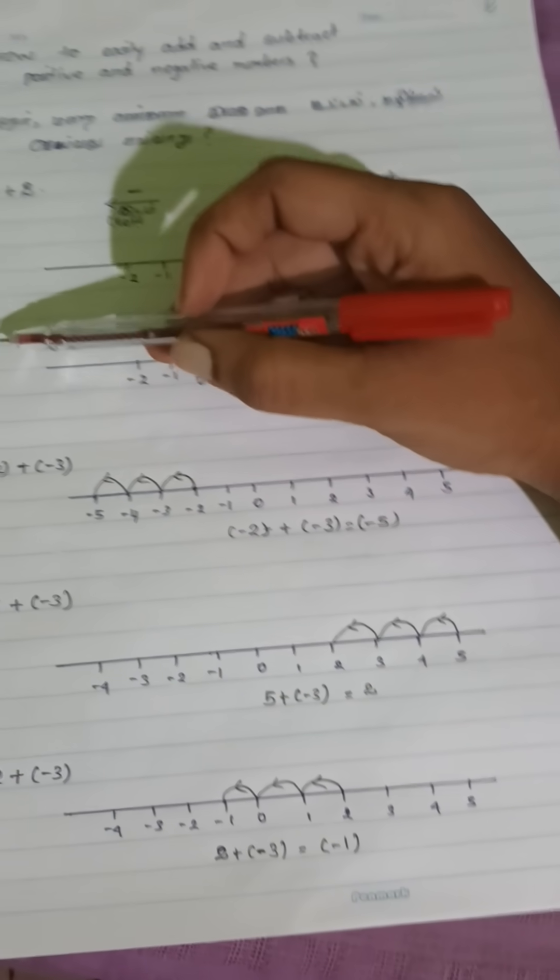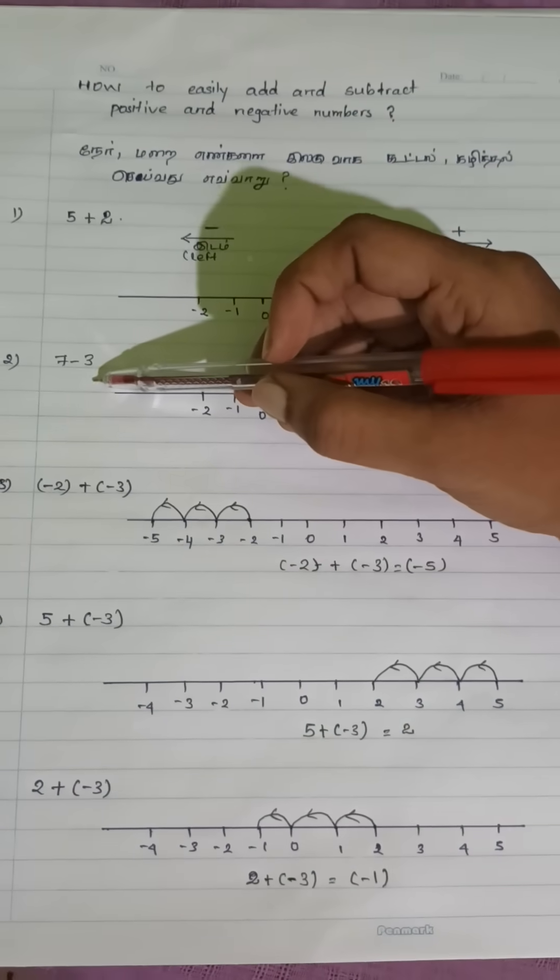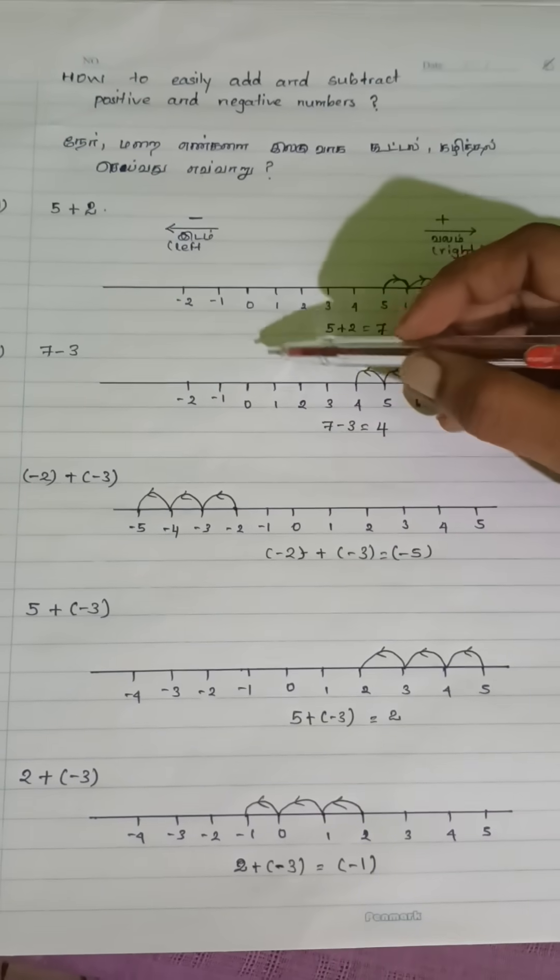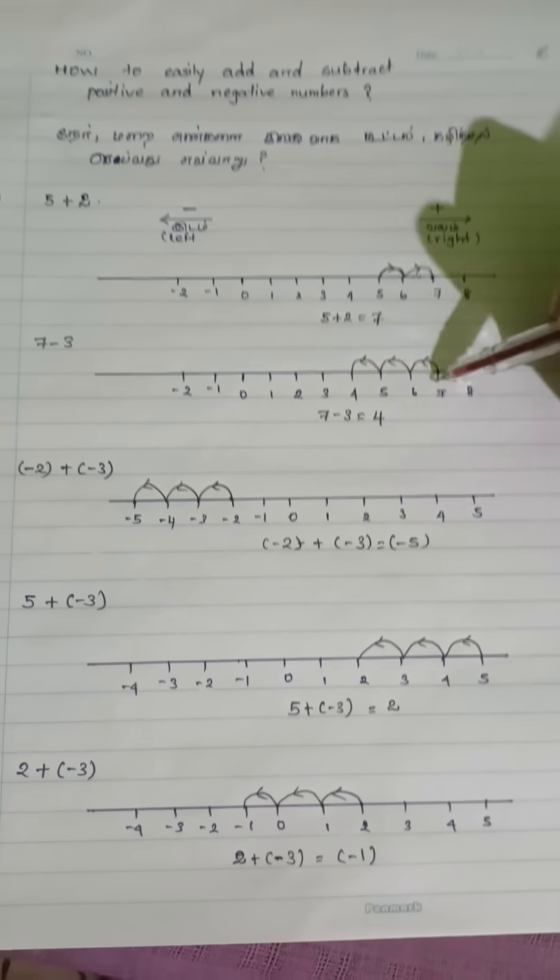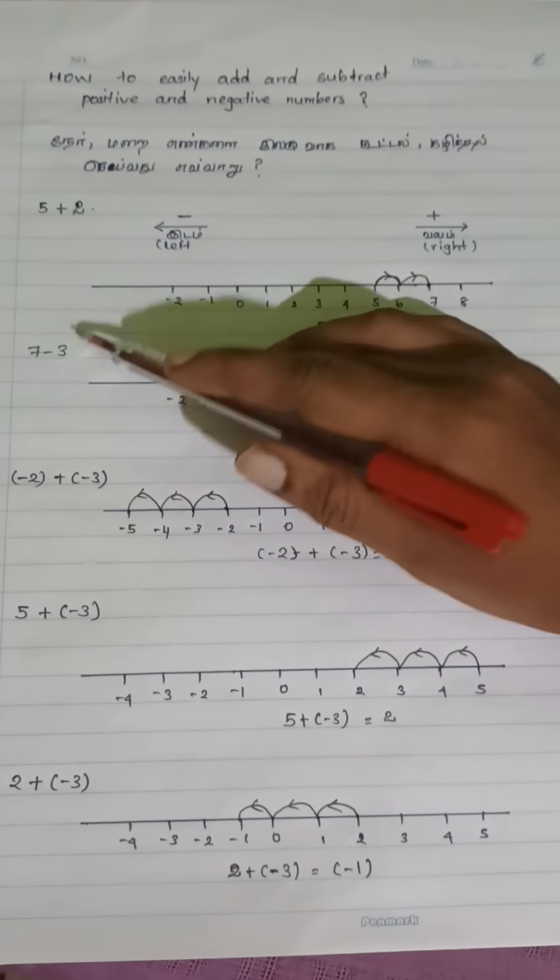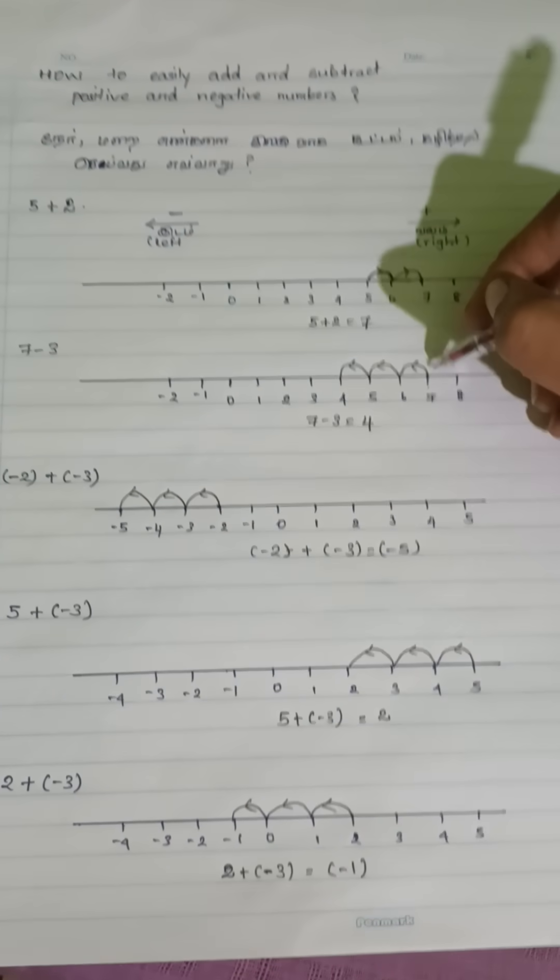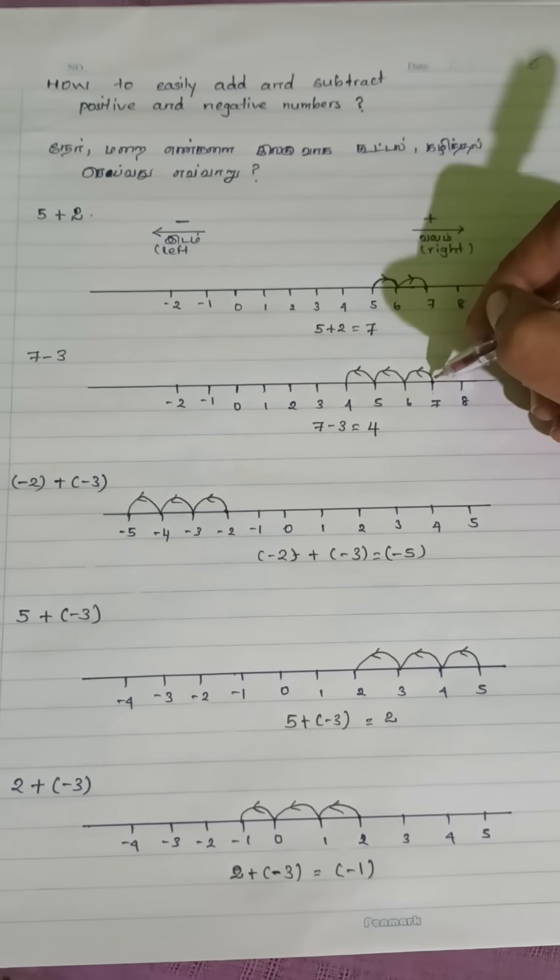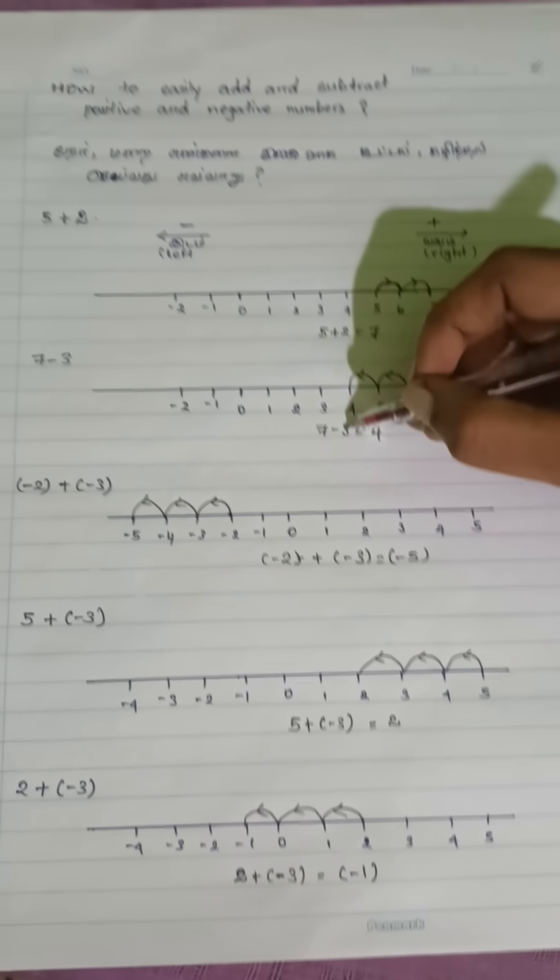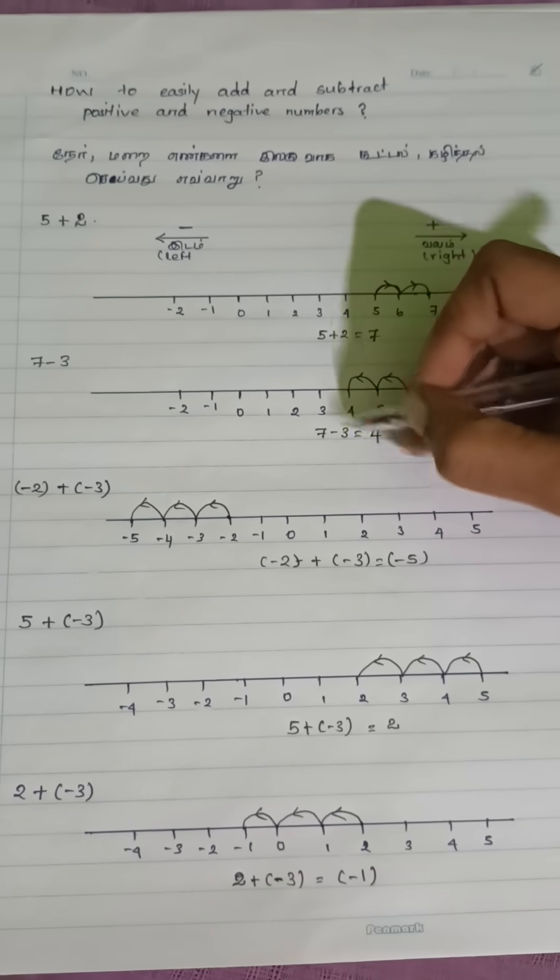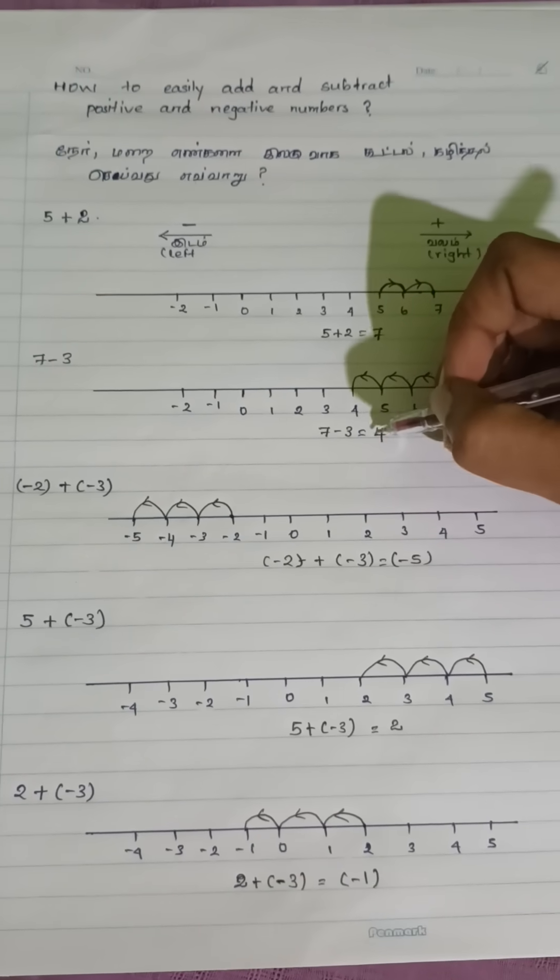Next example, 7 minus 3. You start at 7. This is a negative number, so you step back to the left side. 1, 2, 3. 7 minus 3 equals 4.